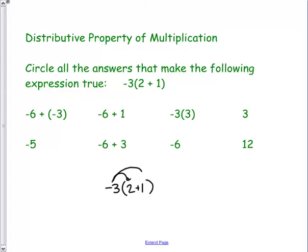Let's look at it with the distributive property first. So a negative 3 times a negative 2 is a negative 6, and a negative 3 times a 1, we're going to add a negative 3.